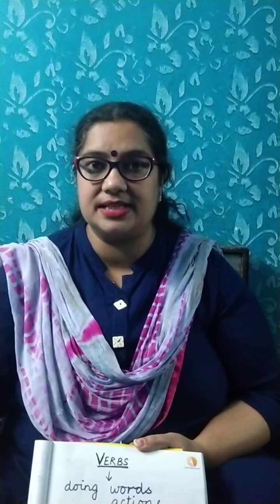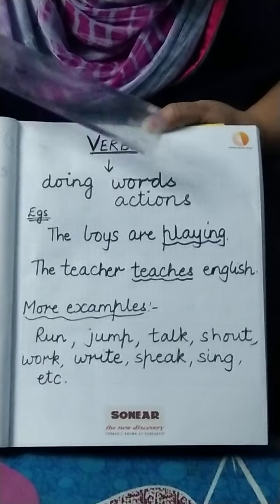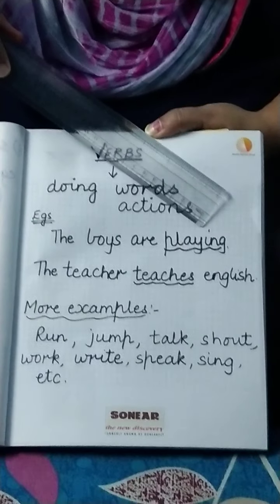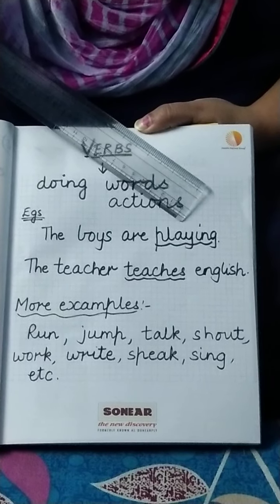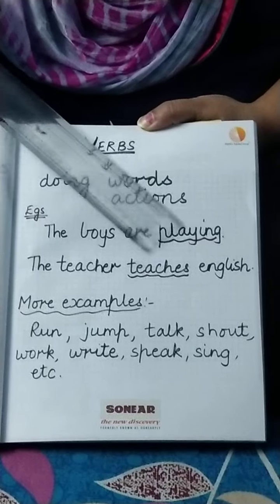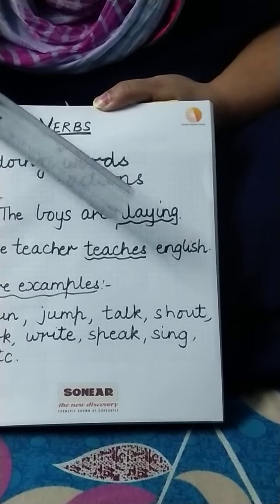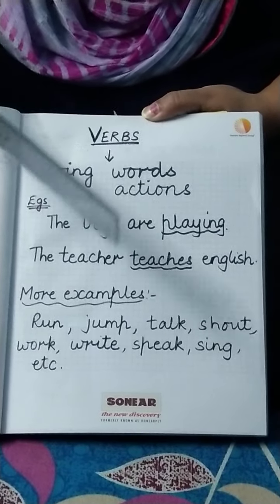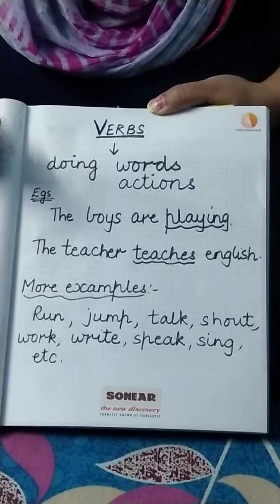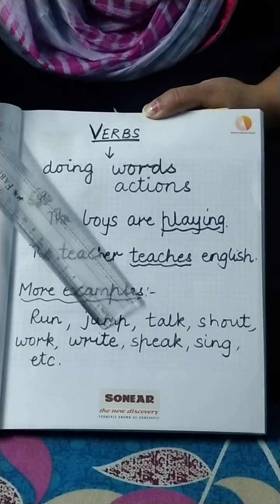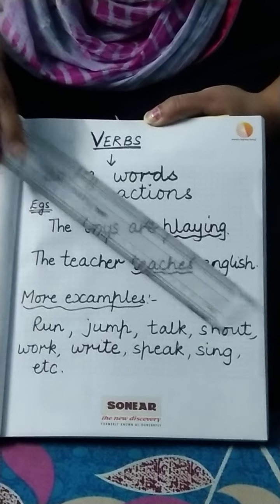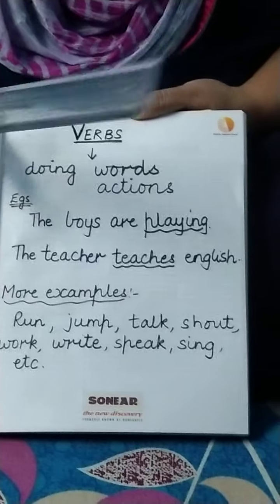Today I am going to take up a very important part of speech — that is verbs. Verbs are also called doing words or action words. For example, 'The boys are playing.' The word 'playing' tells us what the boys are doing, so 'playing' is a verb. In the sentence 'The teacher teaches English,' the word 'teaches' tells us what the teacher is doing, hence 'teaches' is a verb. Some more examples: run, jump, talk, shout, work, write, speak, sing — all these are action words.